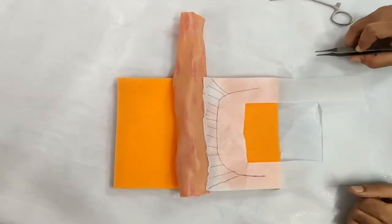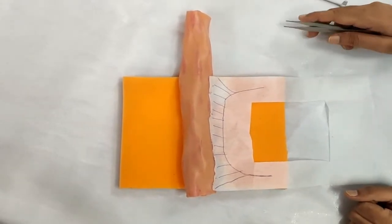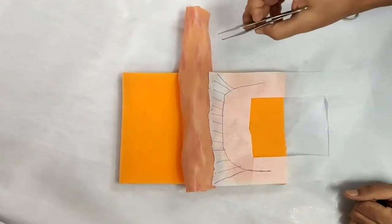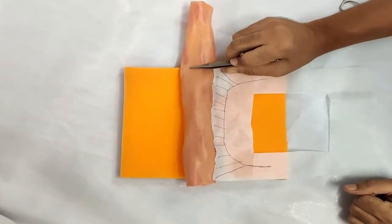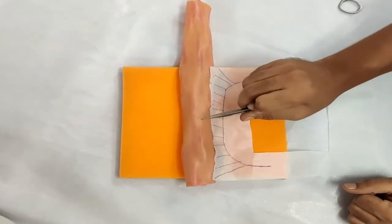So coming on to intestinal resection and anastomosis. There are certain things we need to keep in mind. Here is a loop of small bowel which apparently is diseased and we need to resect and anastomose.